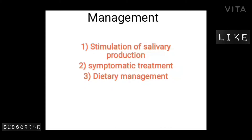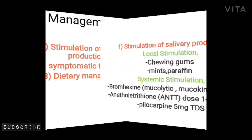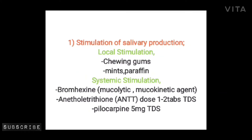Management of xerostomia includes stimulation of salivary production, symptomatic treatment, and dietary management. Stimulation can be done by local or systemic methods. For local stimulation, chewing gum or paraffin wax is used. For systemic stimulation, bromhexine — a mucolytic and mucokinetic agent — can be used at a dose of one to two tablets thrice a day, and pilocarpine 5 mg thrice a day.